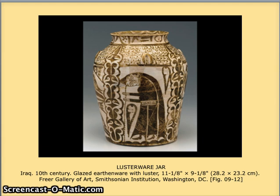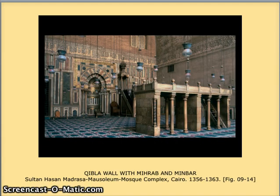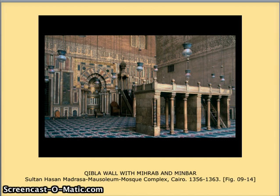Now let's look a little bit more at the art in context. Here we have the great mosque, madrasa, and mausoleum complex in Cairo. In the front we have the minbar, which is the place where the imam stands to make his sermon. And in the back you can see what they call the mirab — the mirab shows the direction to go to pray towards Mecca. So if you see that sort of double horseshoe arch to the left side in the background, that's the mirab.